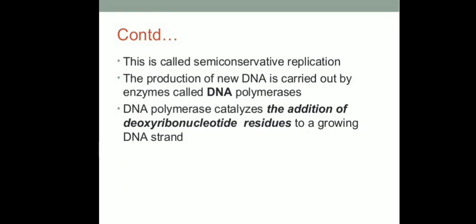The production of DNA is carried out with the help of an enzyme called DNA polymerase, which catalyzes the addition of deoxyribonucleotide residues to the growing DNA strand. This was all about the first type of nucleic acid, the DNA molecule. In the next lecture we will study the second type of nucleic acid, which is the RNA molecule. Thank you.